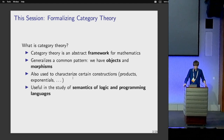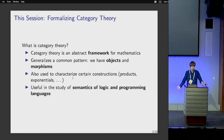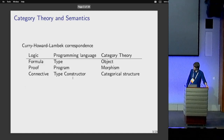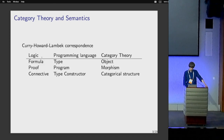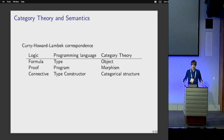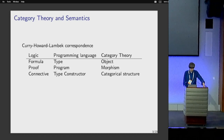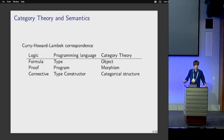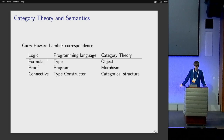Category theory is not only useful for mathematics — it's also quite useful if you're doing logic or computer science. Looking at this table, logic, programming languages, and category theory are all related to each other. In logic we have formulas and proofs, and connectives to build up formulas. That's quite similar to what you do in a programming language.